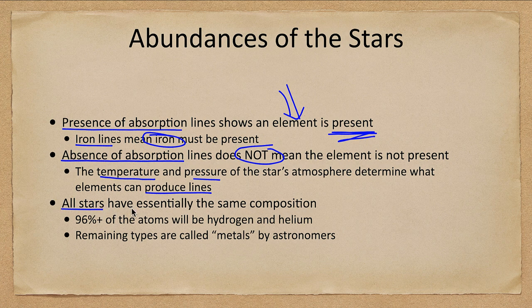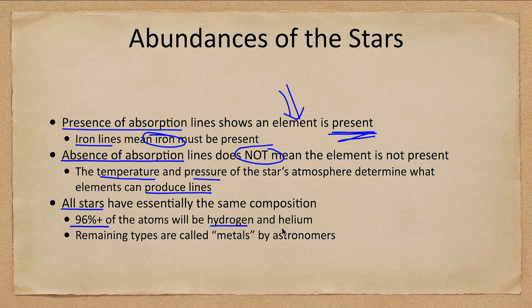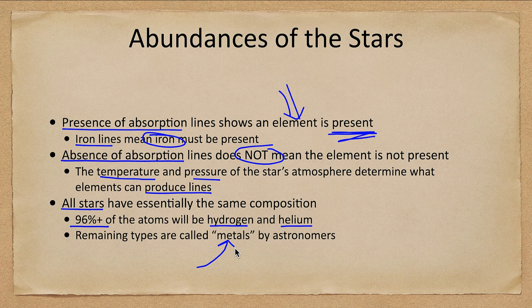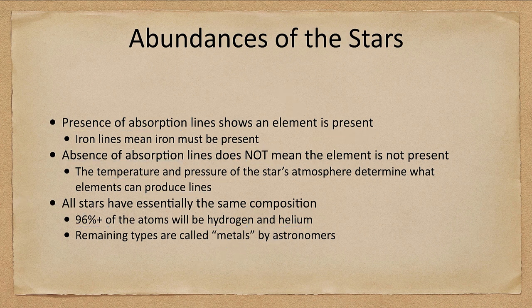All stars have essentially the same composition. 96% or more of the atoms will be hydrogen and helium. The remaining are the metals. Anything else to an astronomer, if it is not hydrogen or helium, is classified as a metal. So when we talk about a metallicity of a star, it's talking about what its composition is in terms of heavier elements.